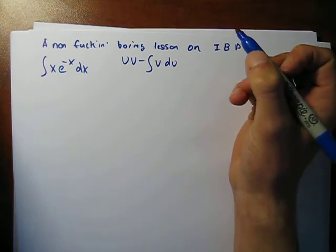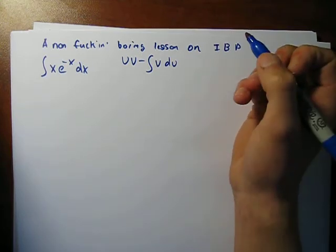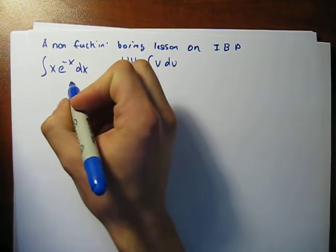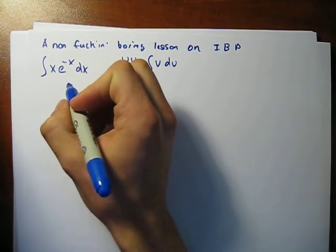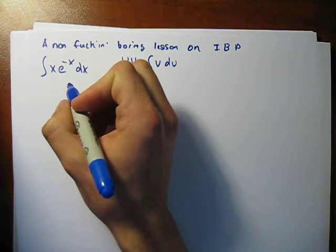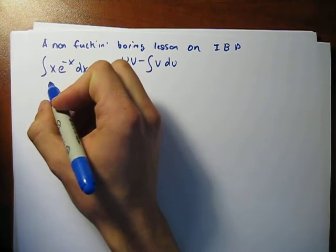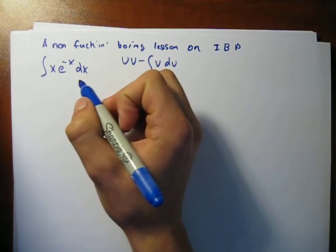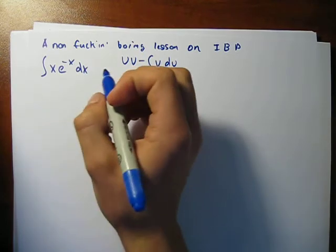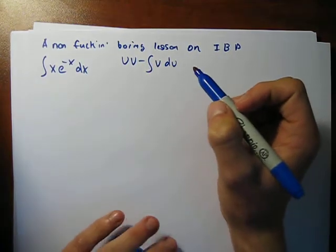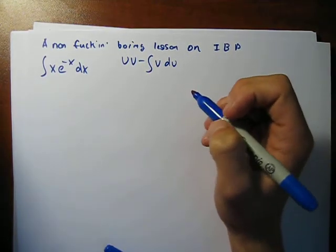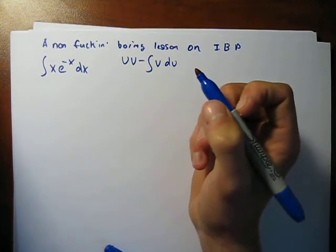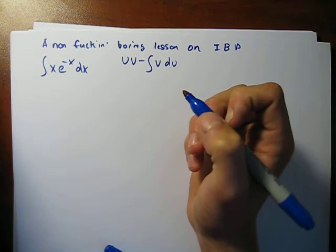So, what does that mean, uv minus the integral of v du? Well, you got to break this integral over here up into a u and a dv. You can choose it however you want, but some ways will work out, some ways won't. And you can make the problem really difficult, or you can make it super easy, all by deciding which you want to do. Now, you're going to take the integral of your dv. That's why it's the dv. Makes sense? And you're going to take the derivative of the u.